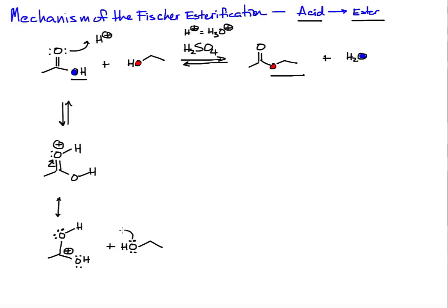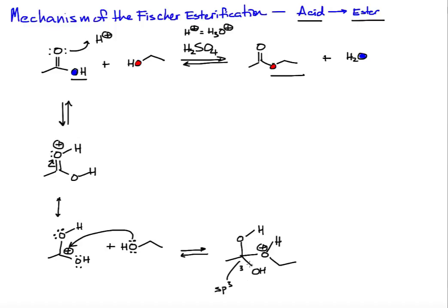The arrow starts at the lone pair of oxygen and goes towards the electron-deficient carbon, forming an oxygen-carbon bond. This oxygen now bears the positive charge. The hybridization of this carbon atom has changed to sp3, and it's still at an oxidation state of 3 — sigma bond to oxygen, sigma bond to oxygen, sigma bond to oxygen — equivalent to what we started with at the acid.